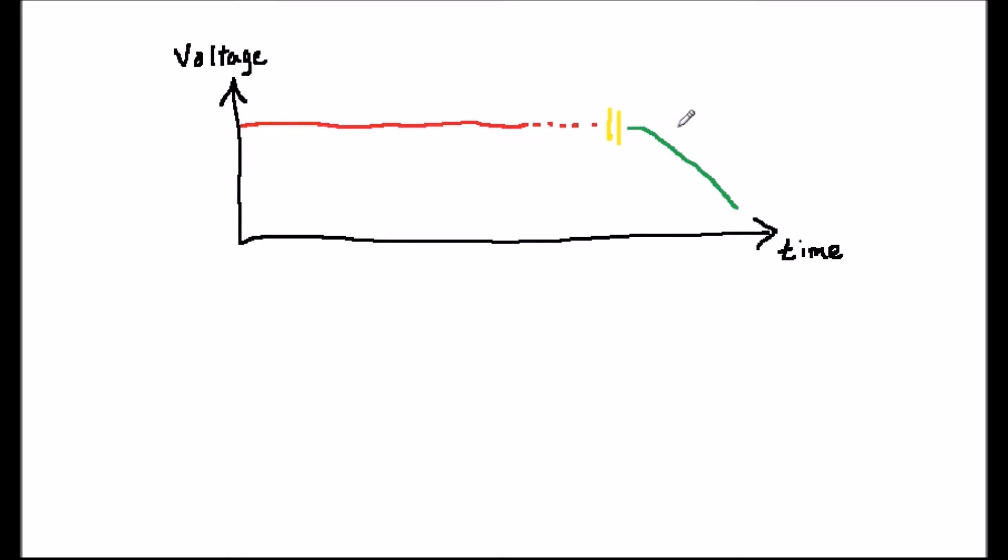Of course over a very long period the battery will run out and the voltage will drop. A voltage like this which doesn't change with time is called a direct current or DC.